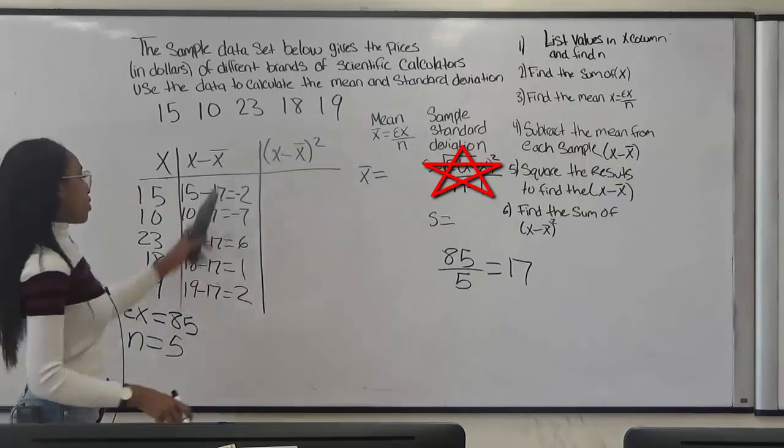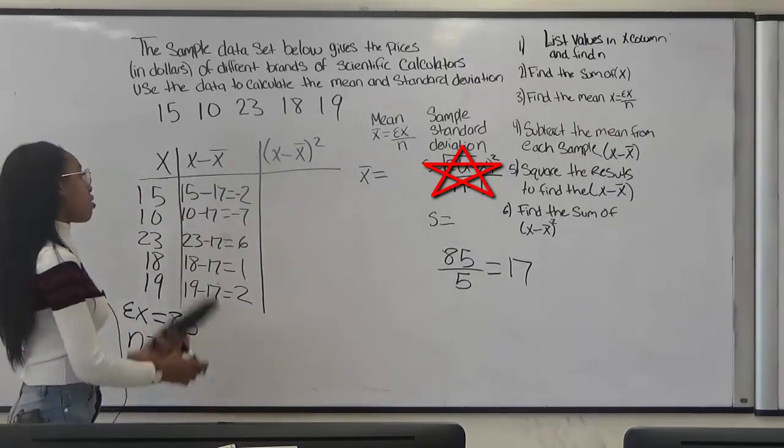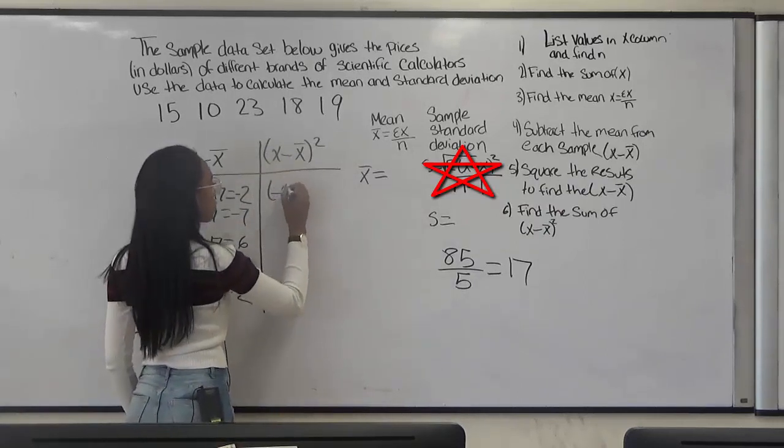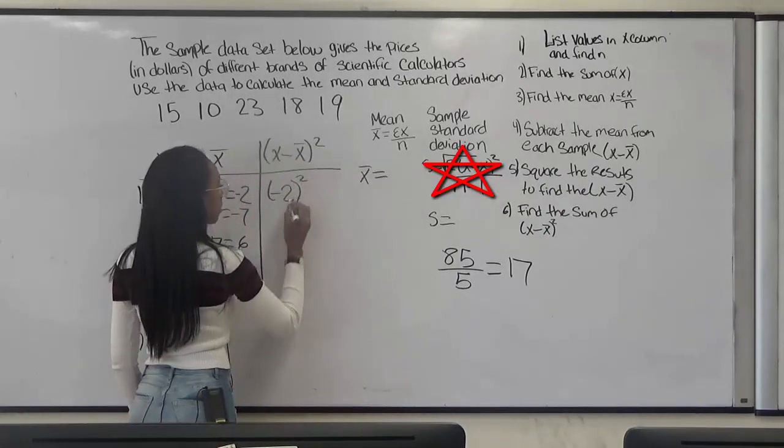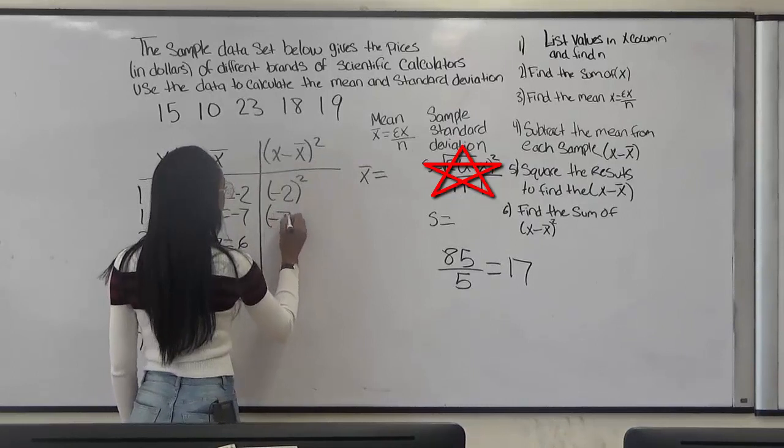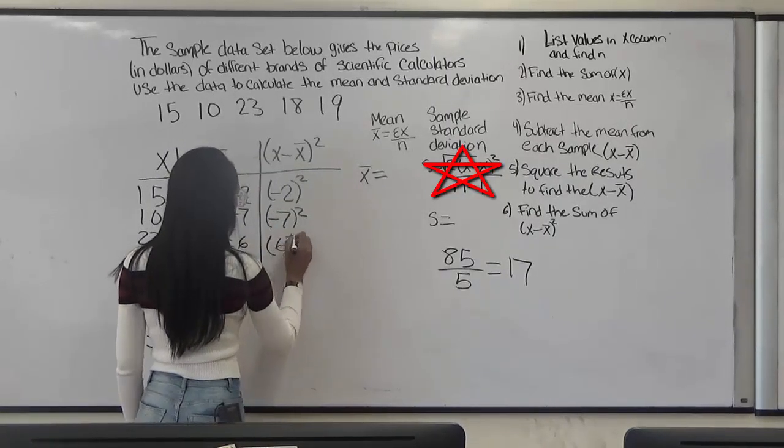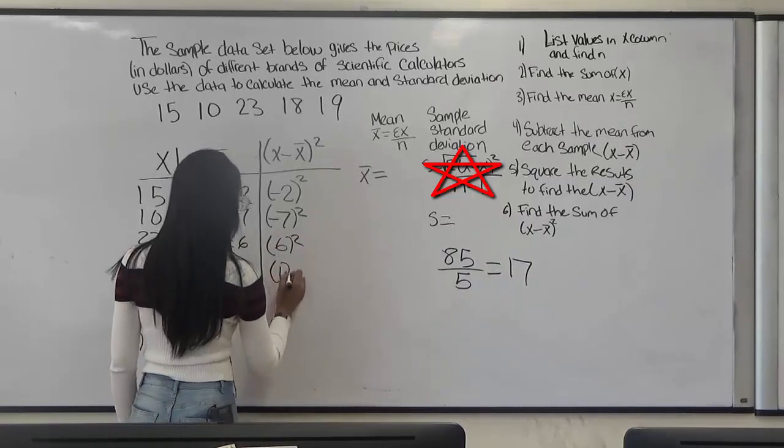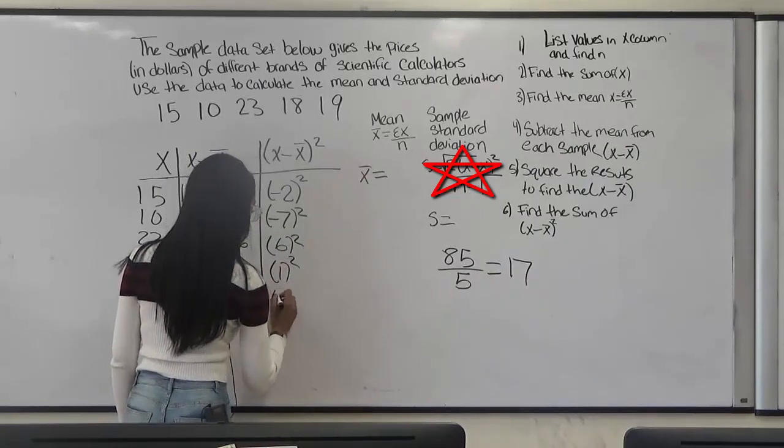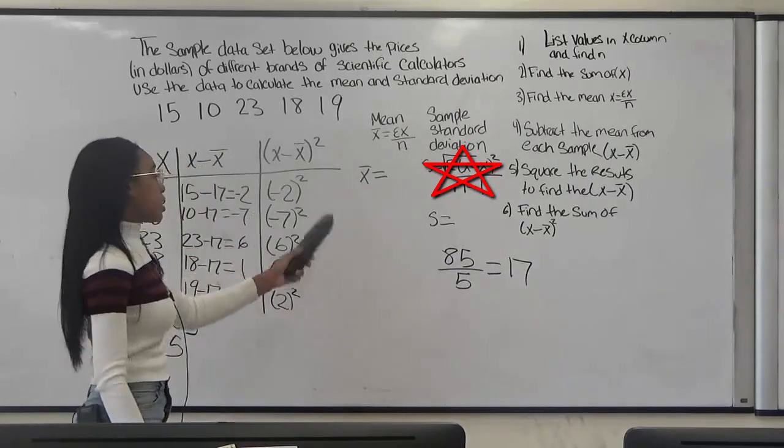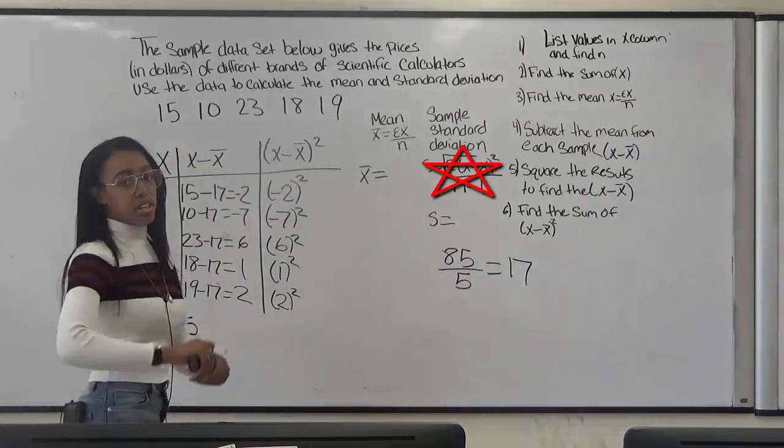So now that we found our results we're going to take our results and square that. So negative 2 squared, negative 7 squared, 6 squared, 1 squared, and 2 squared. You don't have to worry about the negative because once you square it, it's automatically going to be a positive number.